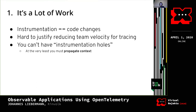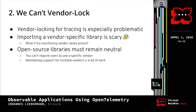Even if you don't care about tracing, you must propagate context across the request path for tracing to work at all. Second, vendor lock-in is never nice, but with tracing it's particularly painful — if the vendor raises prices or changes standards, you'll have to re-instrument your entire codebase. Ops libraries must remain neutral: you wouldn't use a library that forces you to open a New Relic account. And an ops maintainer can't maintain support for all monitoring vendors.